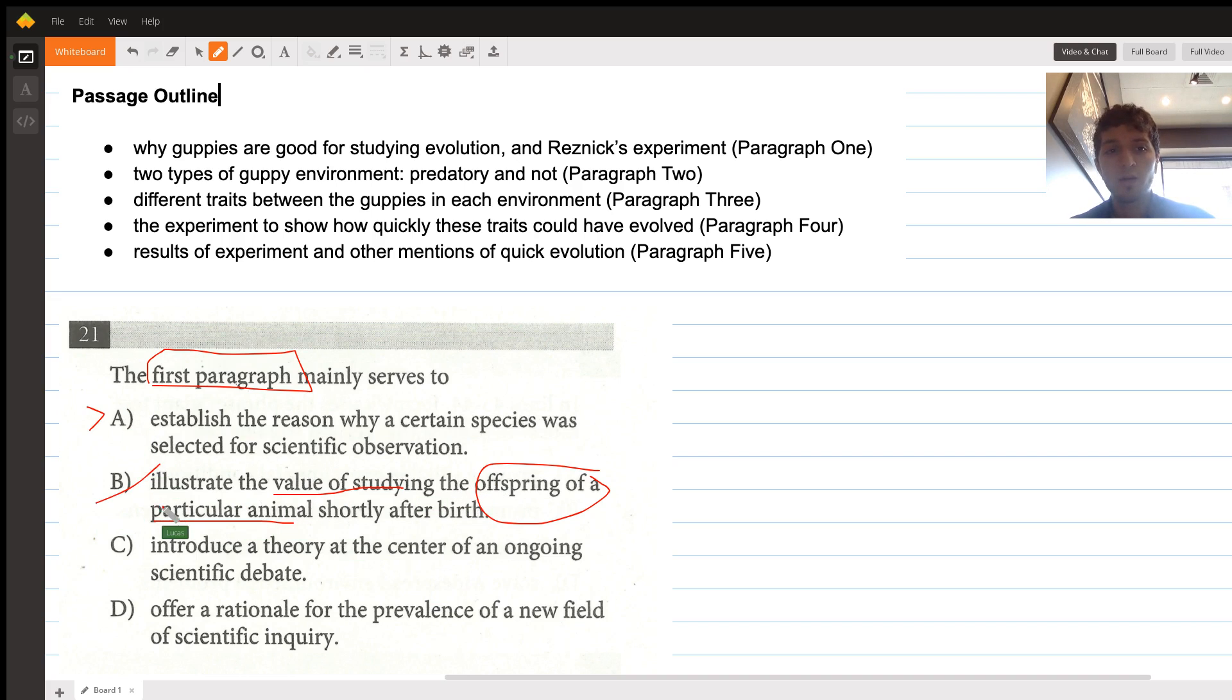C says introduce a theory at the center of an ongoing debate. In that first paragraph there's no theory introduced—all it does is talk about some facts about the guppies and the fact that Resnick is using that fact to study them. So no theory.